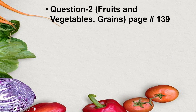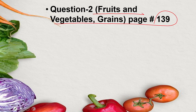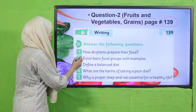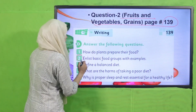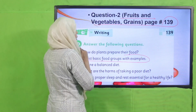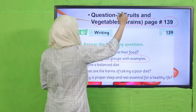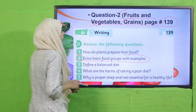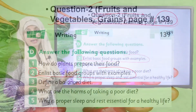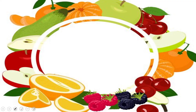Now you will do question number two: enlist basic food groups with examples, given on page number 139. We have already done dry fruits, meat, and dairy. Today you will write fruits, vegetables, and grains and list their examples in your notebooks.